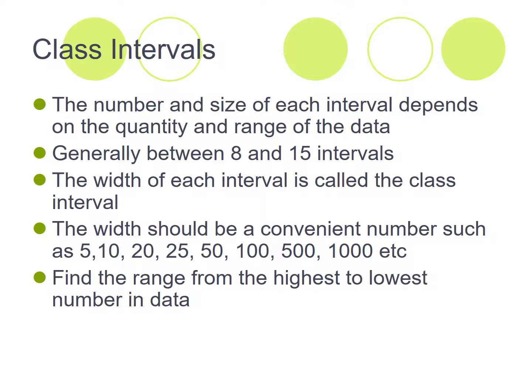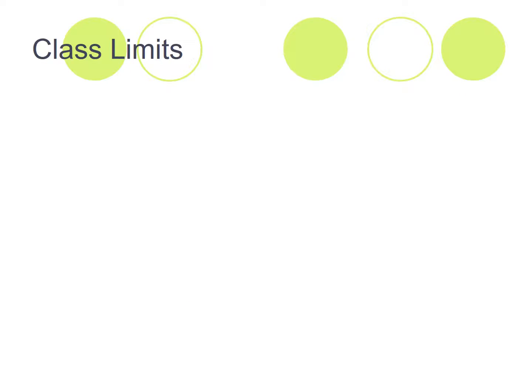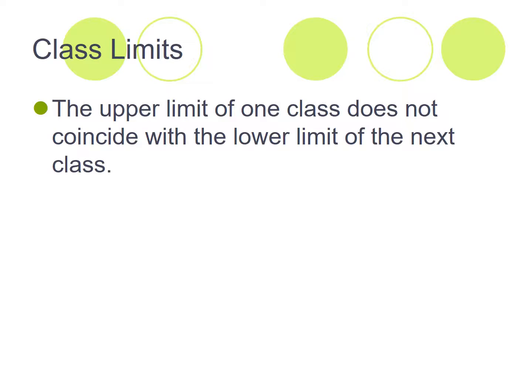And so the method then we have is find the range. And the range is the difference between the lowest number and highest number in the data. So class limits, then the upper limit of one class, you need to make sure that it doesn't coincide with a lower limit of the next class.